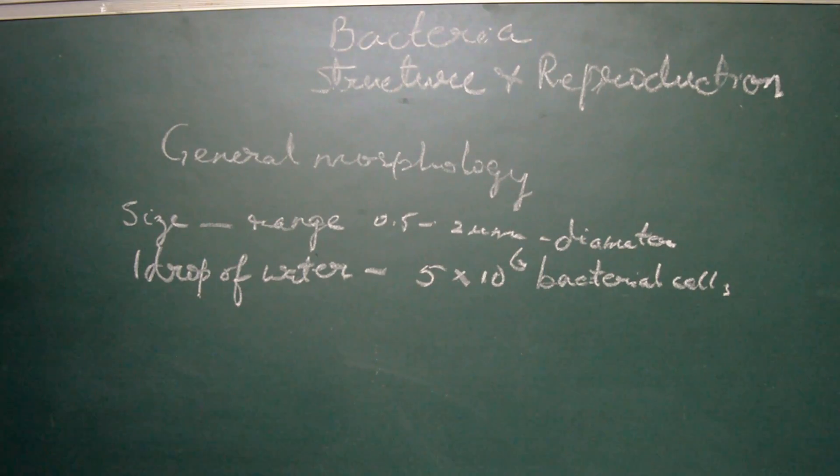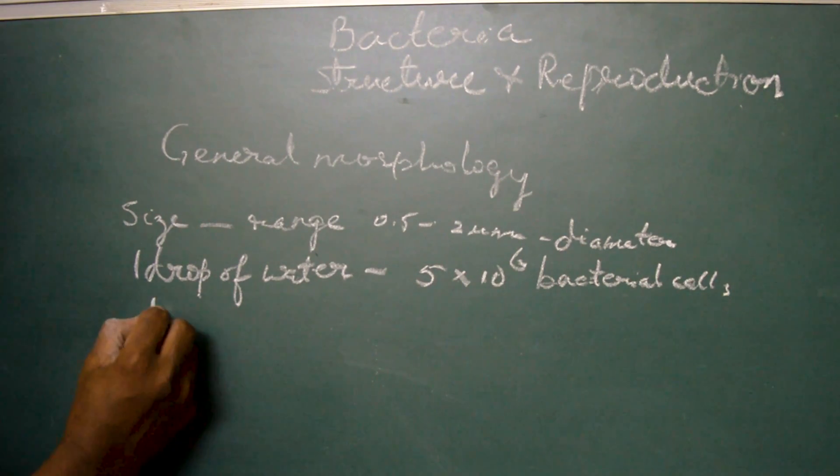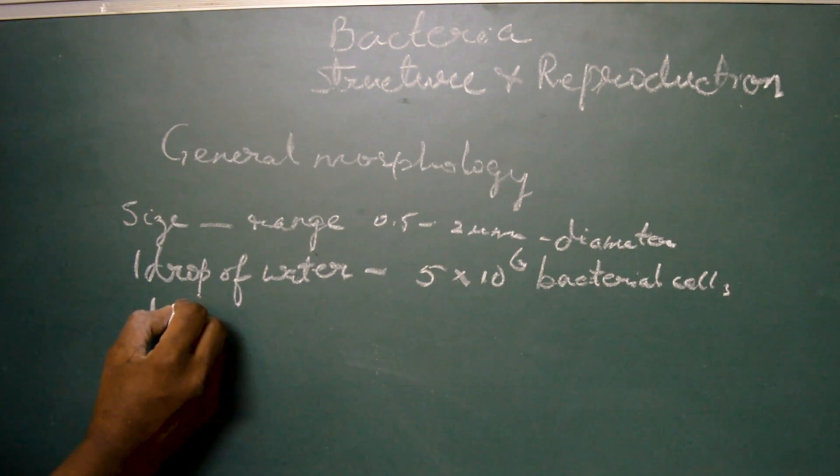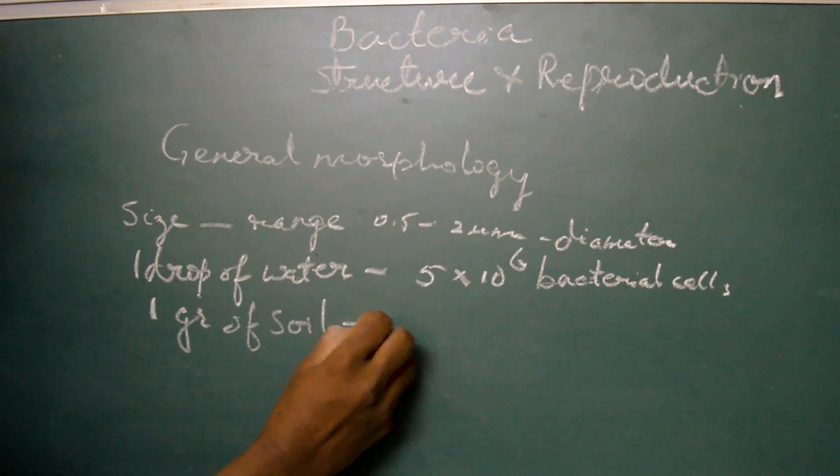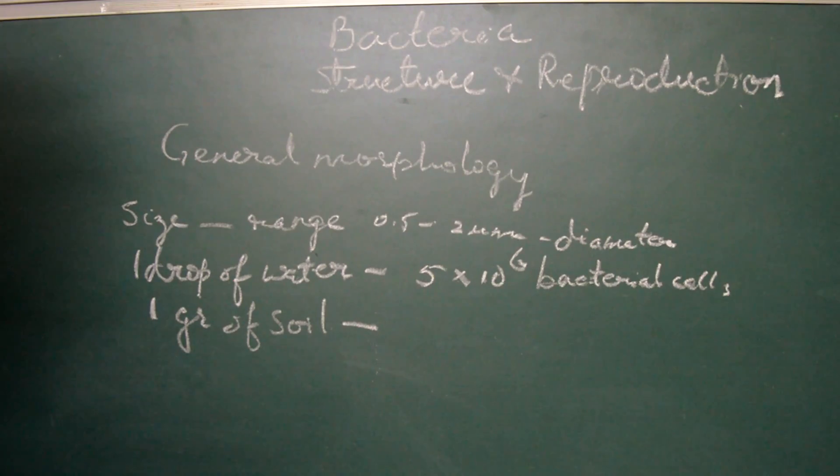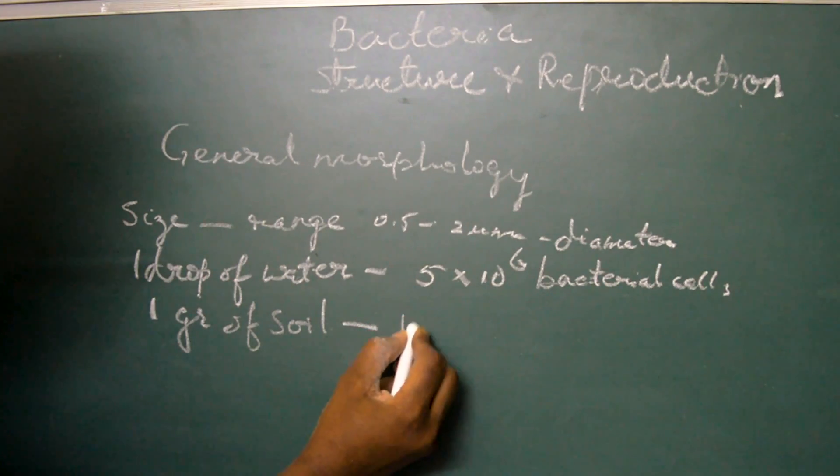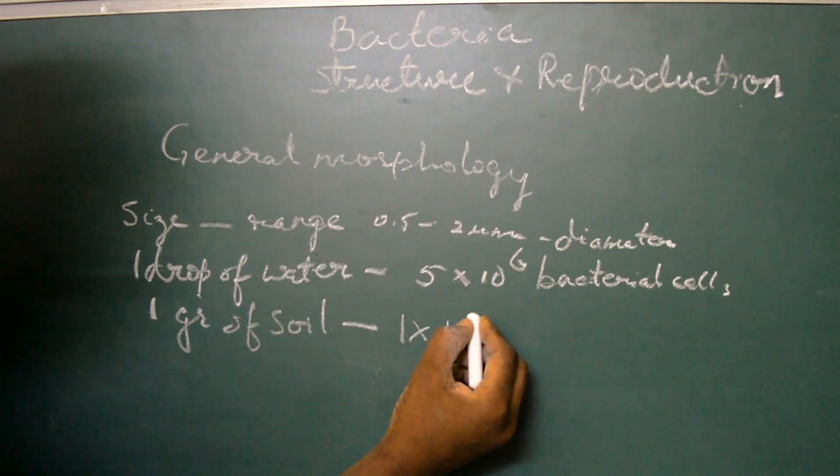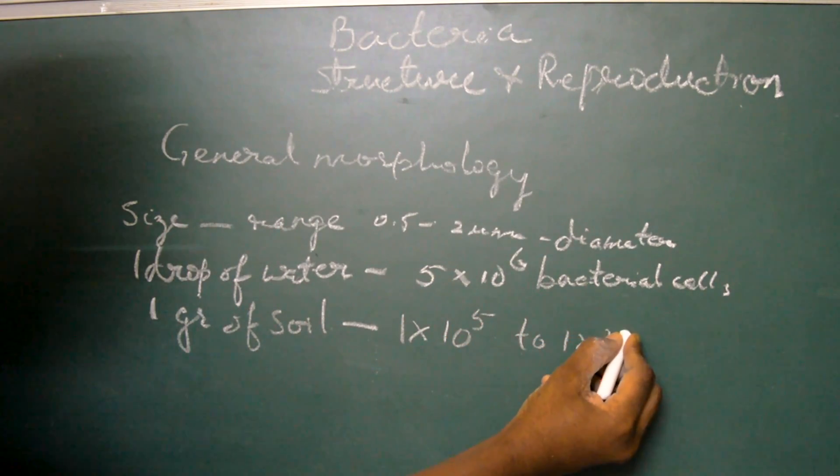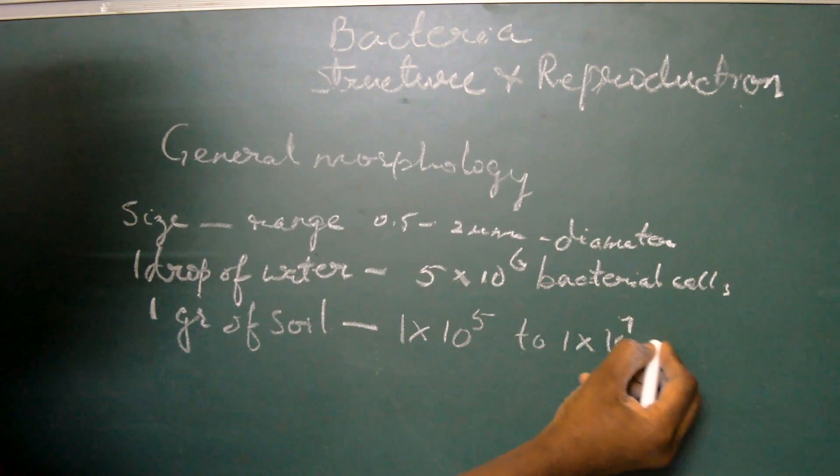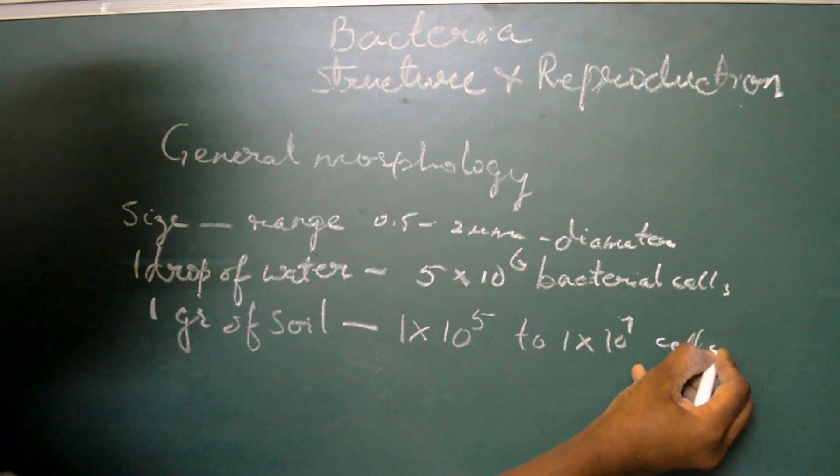In the same way we try to estimate, one gram of soil approximately shows the presence of 1 into 10 to the power of 5 to 10 to the power of 7 bacterial cells.